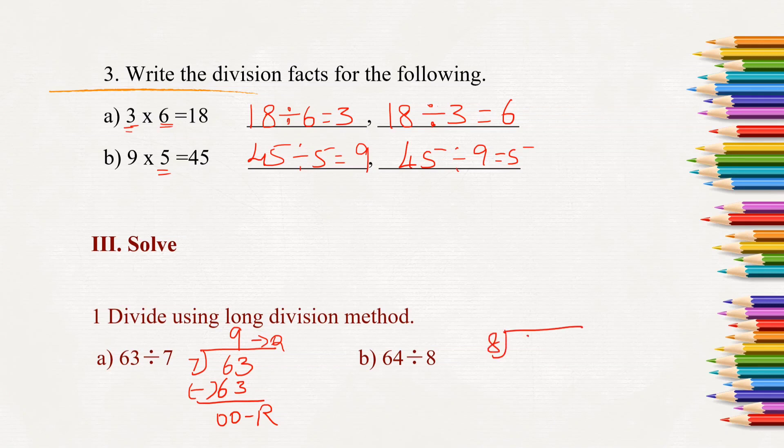Next here, 64 divided by 8. So 8, 8 times is 64. 64 minus 64 is 0. So the quotient is 8 and the remainder is 0.